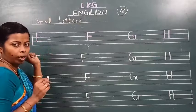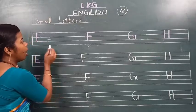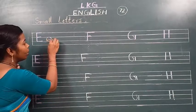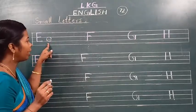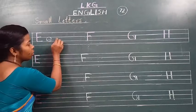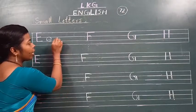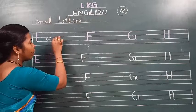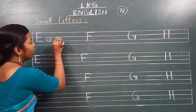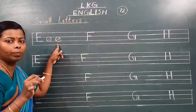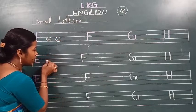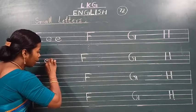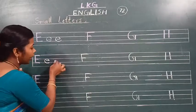Sab likhte hain. Chota sa sleeping line banana hai. Aapko curve banana hai — small letter E. Banao aap sleeping line. Then what do we do when we make a sleeping line? This is a sleeping line — curve, curve banana. Okay, this is a small letter E. Now all of us will make a sleeping line, then a small curve. Small letter E.